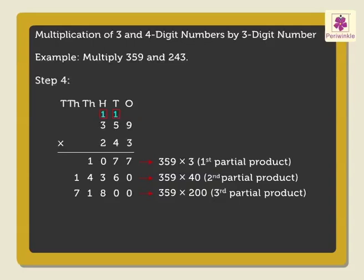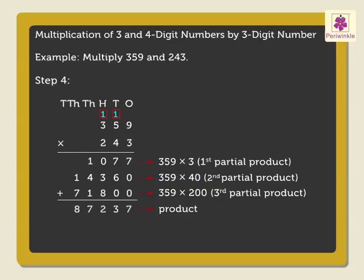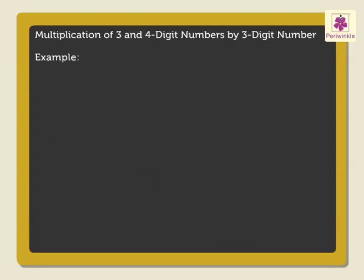Step 4: Now add the three partial products obtained. That is, 1077 plus 14,360 plus 71,800 to get the answer, which is equal to 87,237. Now, let us find the product of 3,247 by 108.